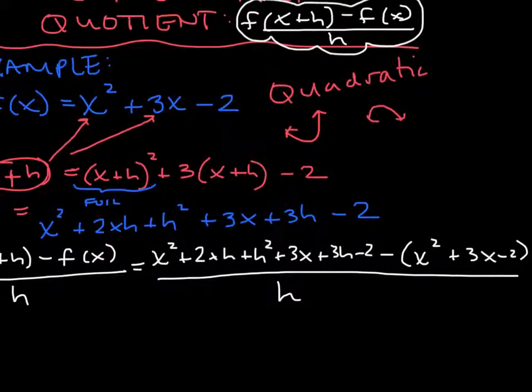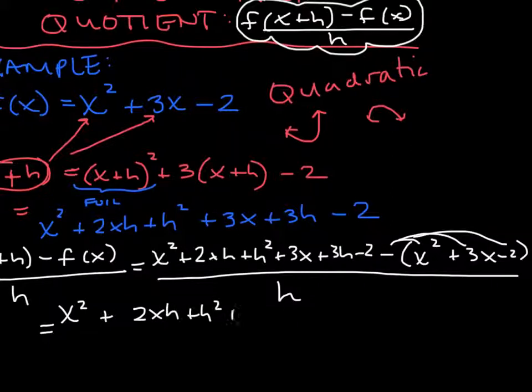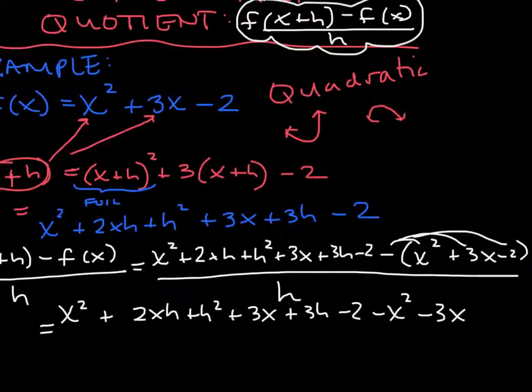My next step I'm going to distribute that minus sign to all these parts. So I really have x² + 2xh + h² + 3x + 3h - 2 - x² - 3x + 2, all over h. Right now it looks like a big mess but all the time in this difference quotient after I get to this step lots of things start happening. It won't end up to be a big mess when I'm done.